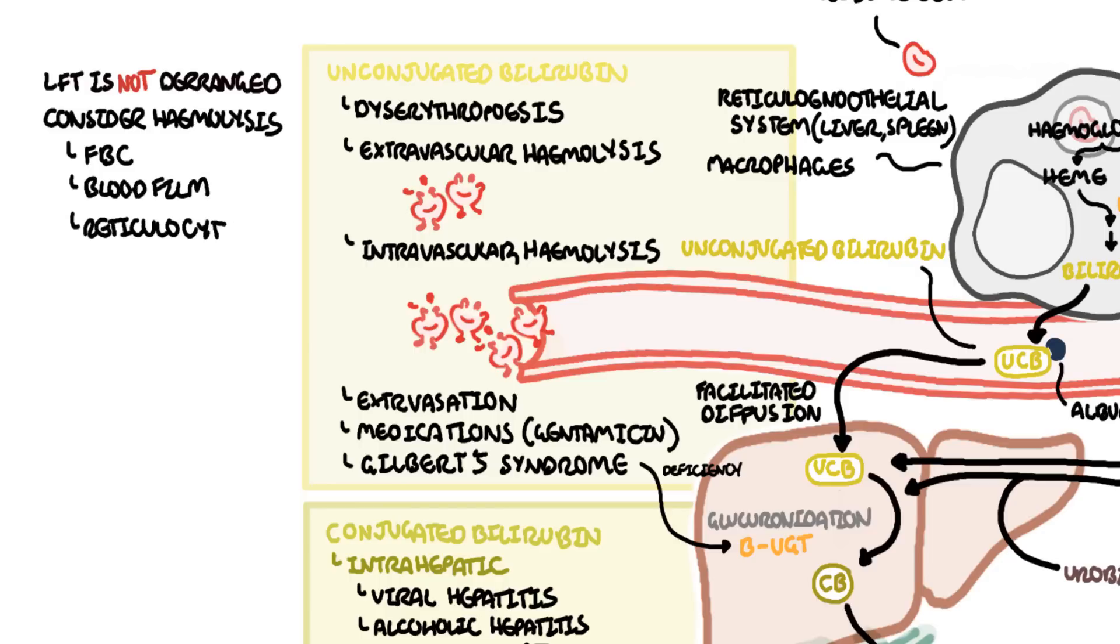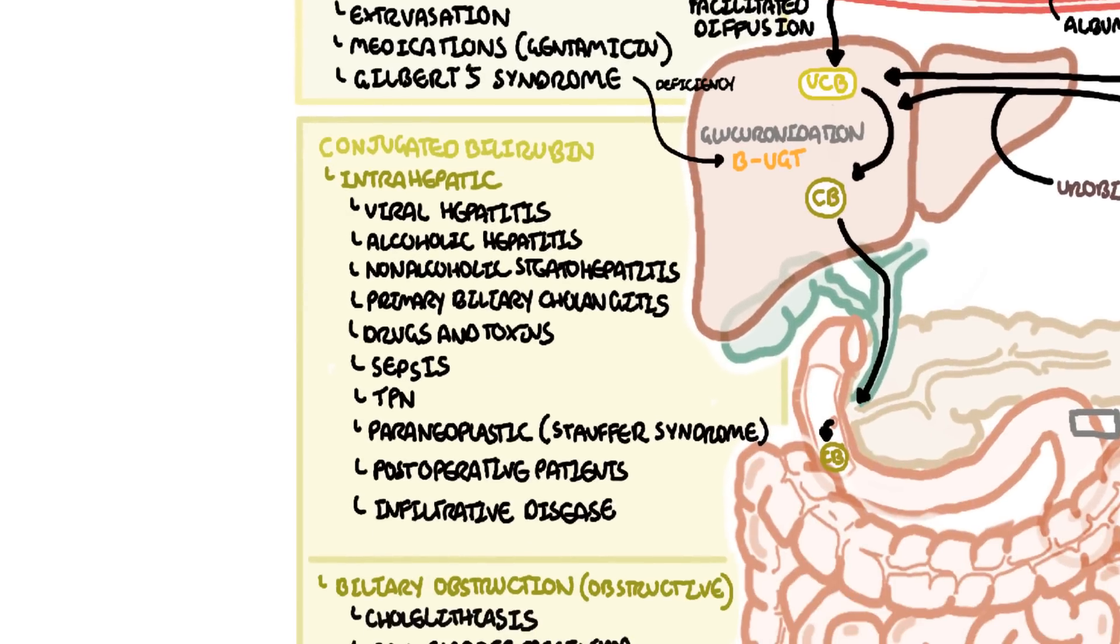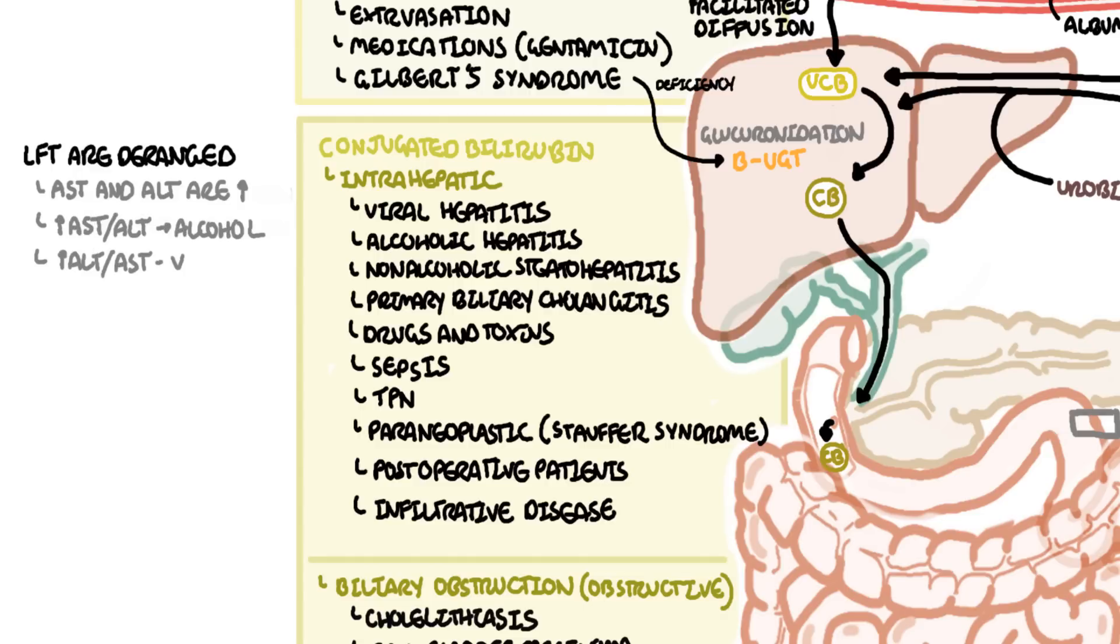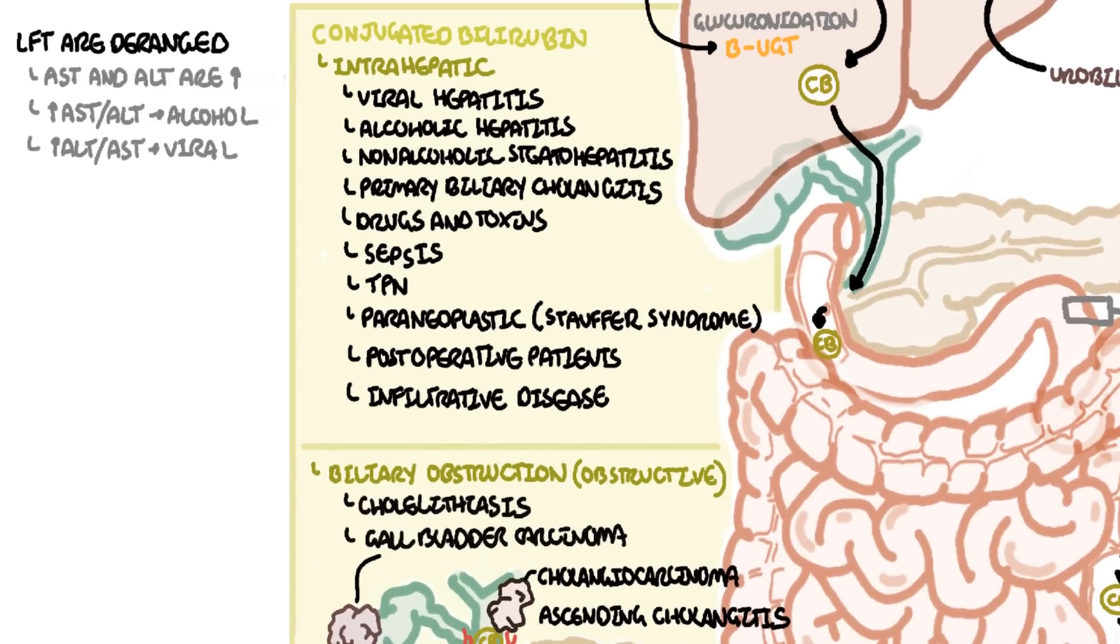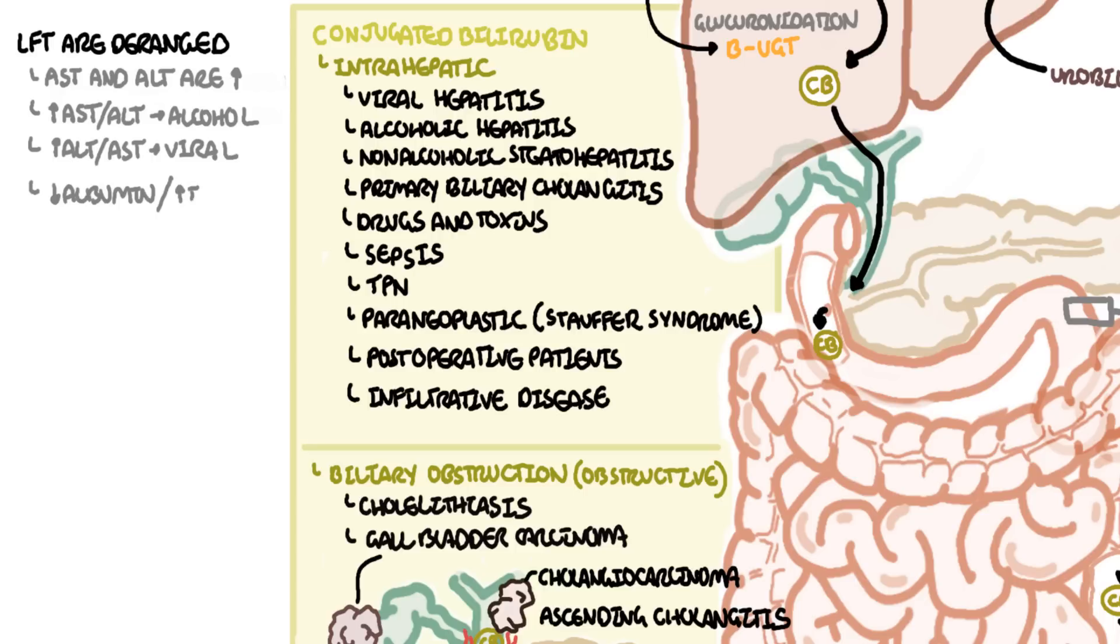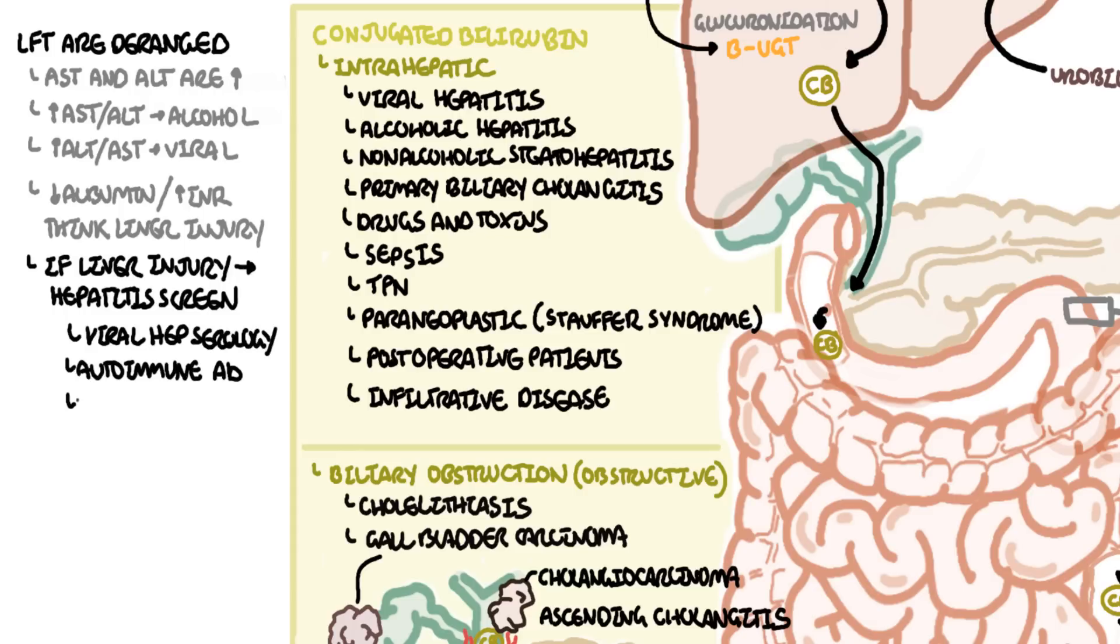For conjugated bilirubin, think about intrahepatic causes of jaundice which will cause the LFTs to be deranged. The AST and ALT are typically high because it's intrahepatic. High AST to ALT ratio signifies alcoholic hepatitis, whereas high ALT to AST mostly indicates other liver diseases including viral hepatitis. An elevated INR with low albumin would indicate severe hepatic disease or dysfunction. In this scenario, you have to continue and perform what's called a hepatitis screen, including blood tests for hepatitis B and C serology, autoimmune hepatitis, checking iron studies to look for hemochromatosis, amongst many other things.